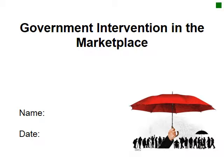In this PowerPoint, which we'll look at over two or three classes — it's fairly long — we're looking at government intervention in the marketplace. As you can see from the photo with the umbrella, the government is trying to protect different members of society, whether they are consumers or producers.